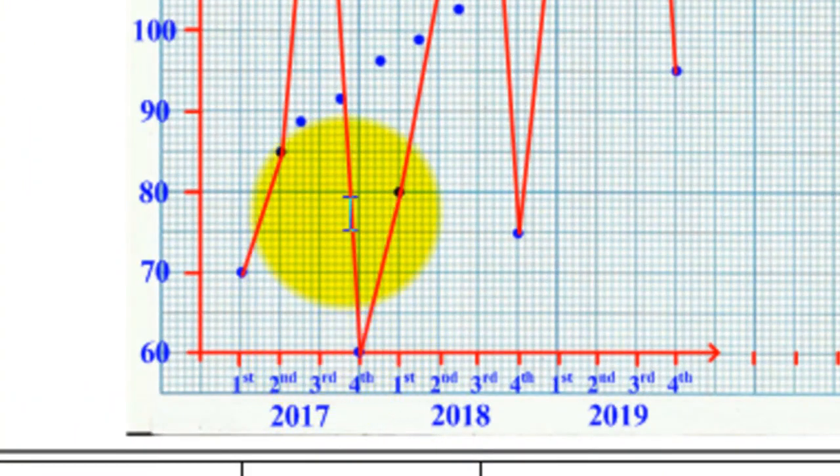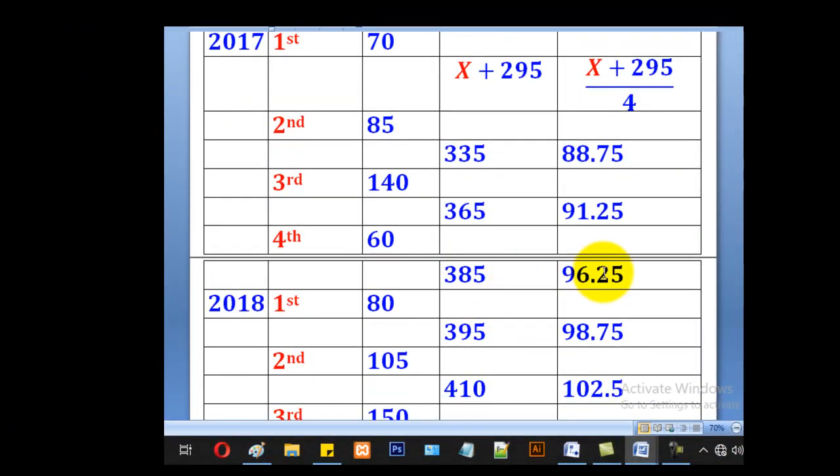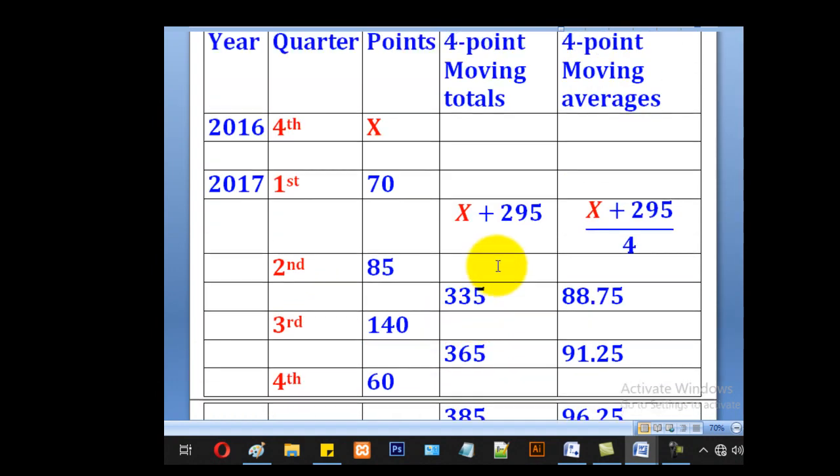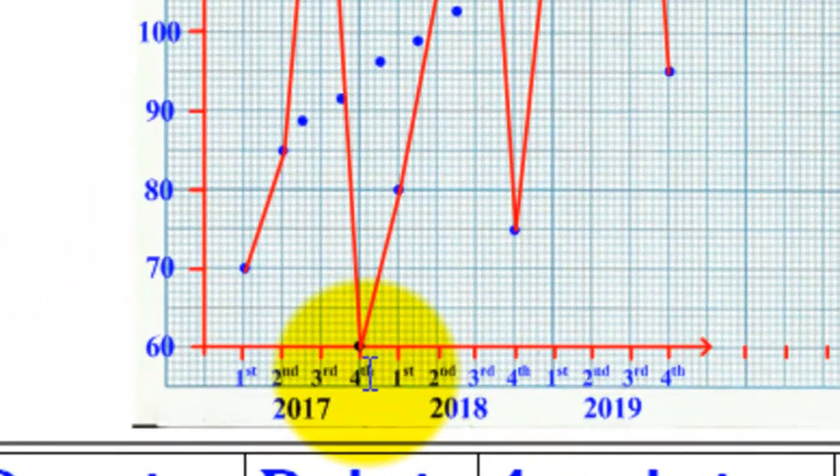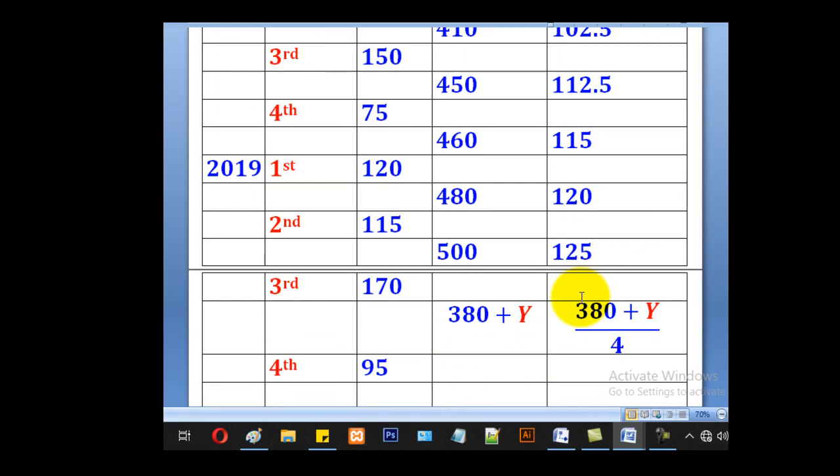Go between third and fourth of 2017, look for 91.25 and plot it. The next will be 96.25 between fourth and first. Fourth of 2017 and first of 2018. Take it up and look for that value, then you plot it.